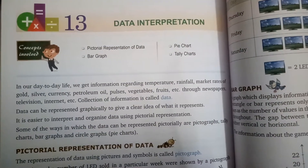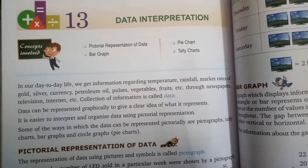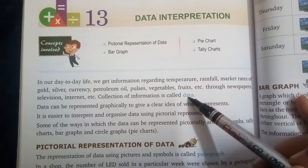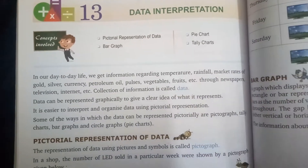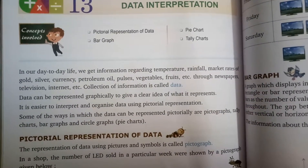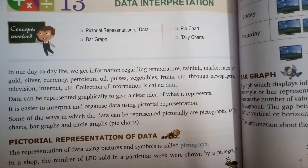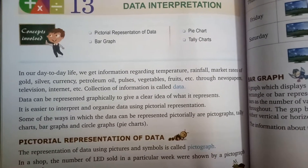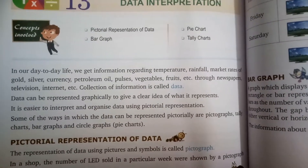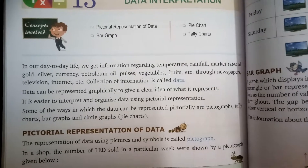Good morning everyone, welcome back. We are going to start the 13th chapter, that is Data Interpretation. First of all, we will understand what data is. The collection of information is called data. In our day-to-day life we get information regarding temperature, rainfall, market rates of gold, silver, currency, petroleum, oil, pulses, vegetables, fruits, etc. through newspaper, television, internet, etc. Data can be represented graphically to give a clear idea of what it represents.